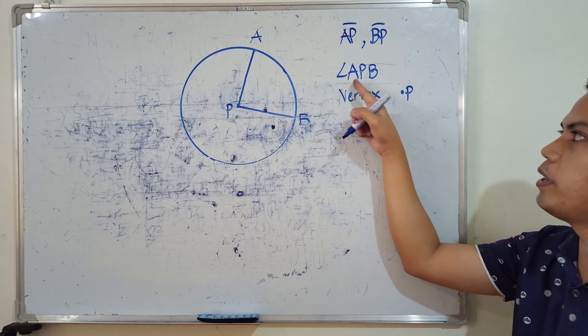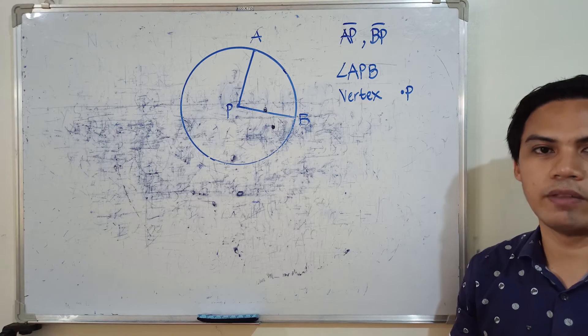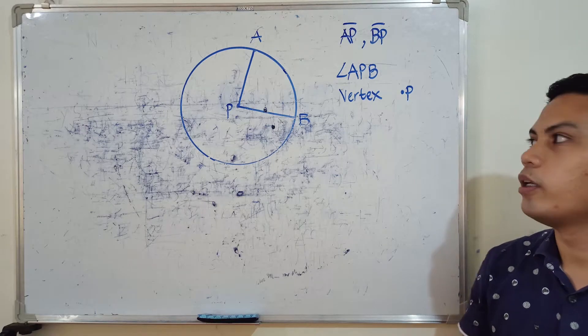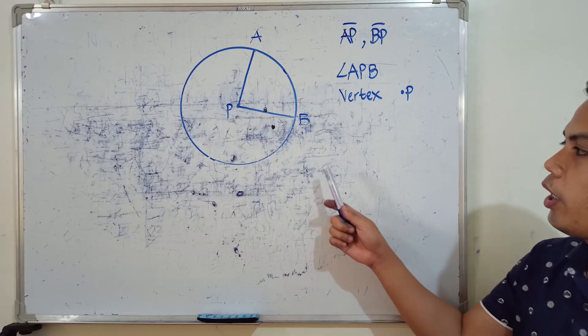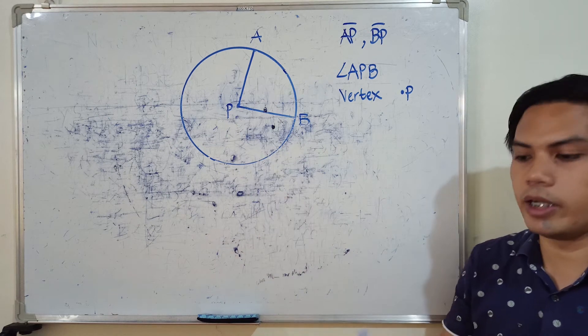We can also refer to it as angle BPA — they are the same central angle. We also have the term called intercepted arc. Intercepted arcs are arcs formed when two different chords or line segments cut across a circle and meet at a common point called the vertex.